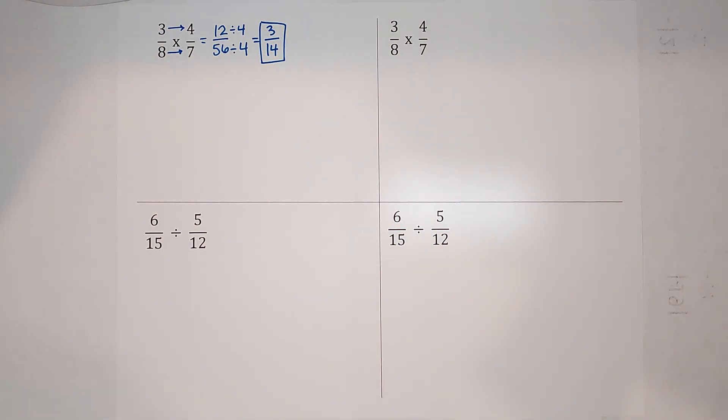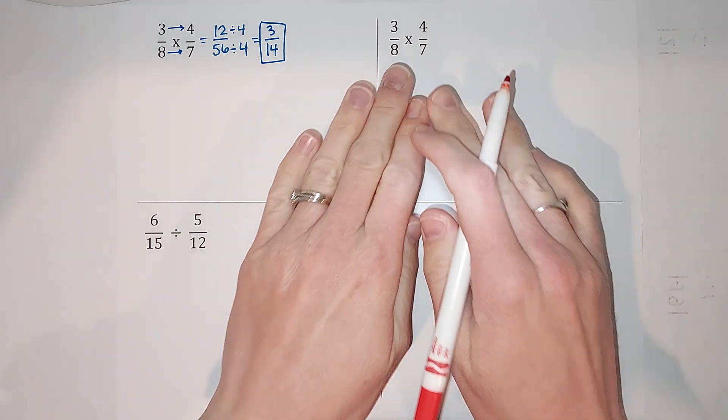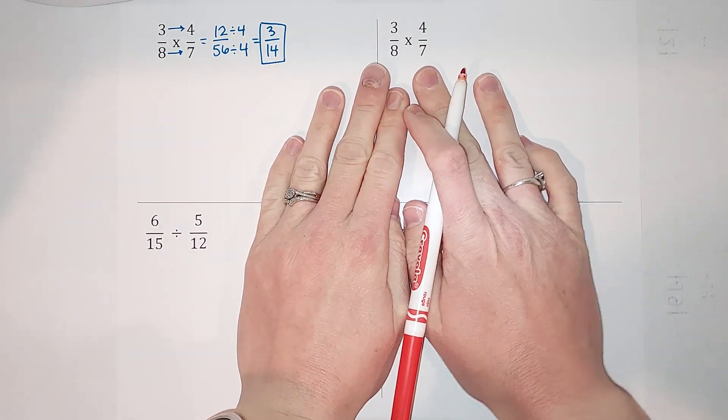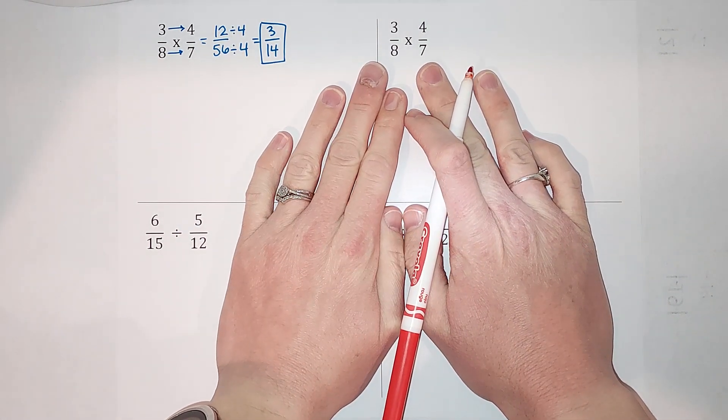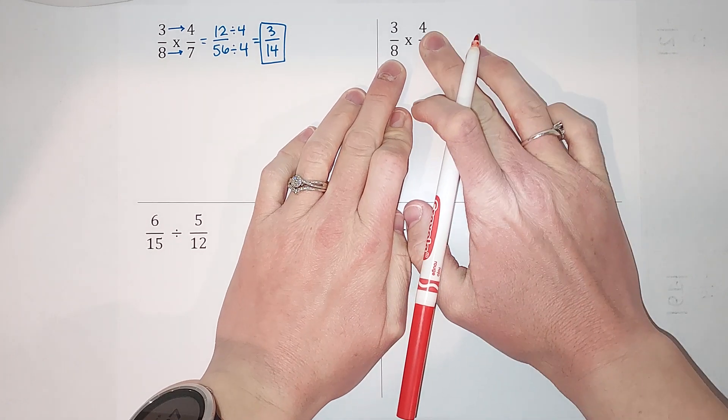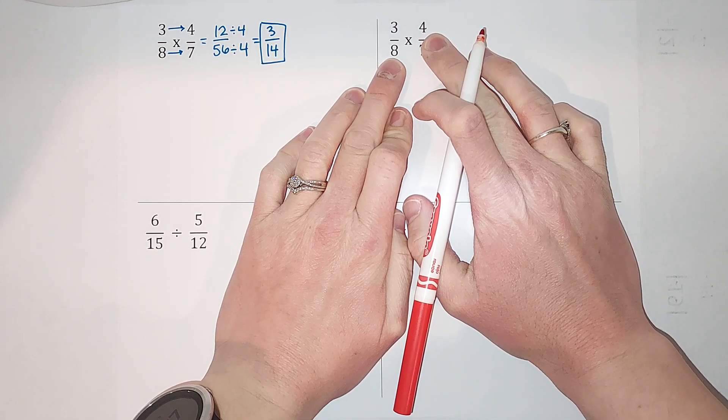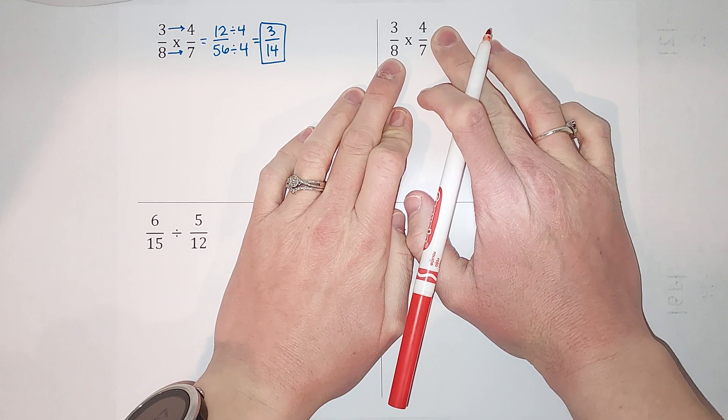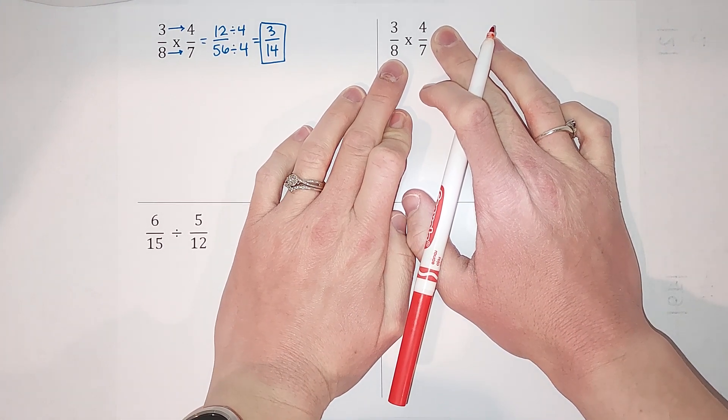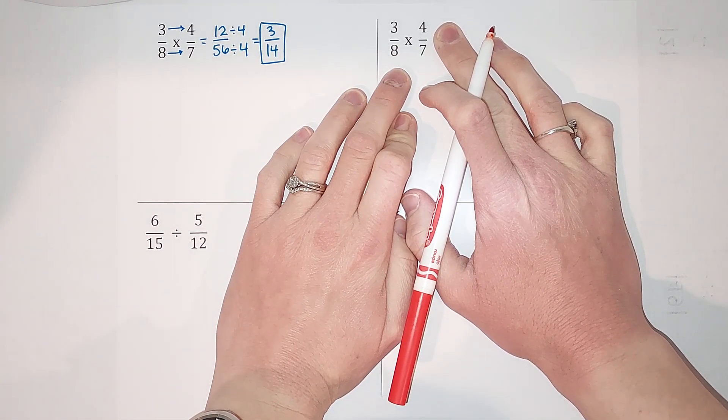Now we're going to do the same problem but a little different. When you see a problem like this, as you do them more, you will probably start to notice things like 8 and 4. You're like, 'oh, 8 and 4 can simplify with each other.' As long as one is on top and one is on bottom, you can notice this and do something about it.